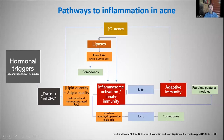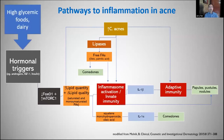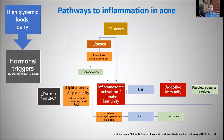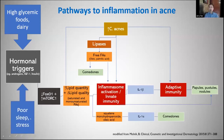So we don't really need C. acnes as part of the inflammation pathway. This is helpful to understand because some patients with acne don't have a lot of C. acnes. The driving factors may be hormonal triggers — insulin, IGF-1, and androgens — from high-glycemic foods and dairy. Interesting work has been done in native populations in Papua New Guinea, the Aché Indians in South America, and those with Laron syndrome who don't make much IGF-1 and have no acne until given recombinant IGF-1. Poor sleep and exam stress can also trigger acne.